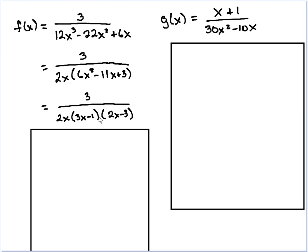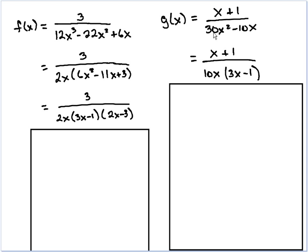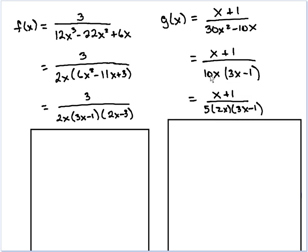Now that f(x) is completely factored, let's look at g(x). We factor out the 10 and the x and the (3x - 1). I'll take one more step and break that 10 into 5 × 2 and x, because I know I have a 2x over in f(x) and I want to be able to see it here. Sometimes if you saw that, you didn't have to take that step, but visually it looks a little better.